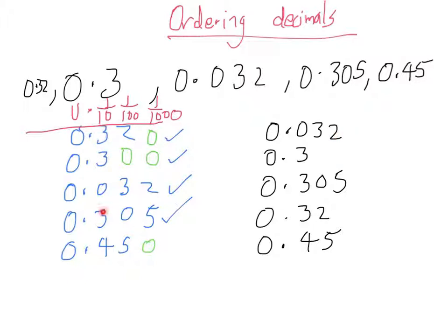Then we can see the next smallest tenths are these threes. Because there's three of them we need to look into the hundredths column and think which one's the smallest. We've got two zeros, so we've got to go over to the next column, the thousandths. That's when we see that this 0.3 is the smallest, then 0.305, etc.